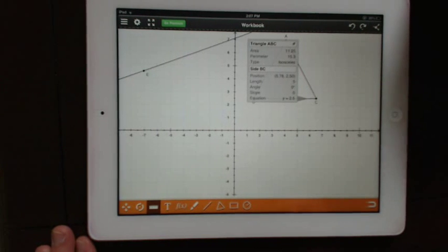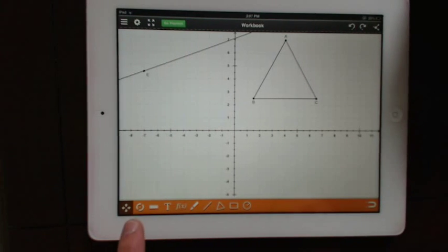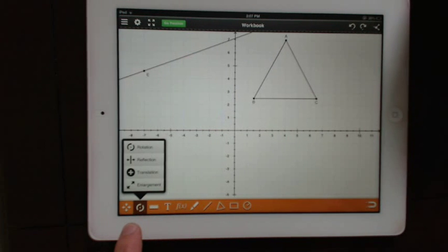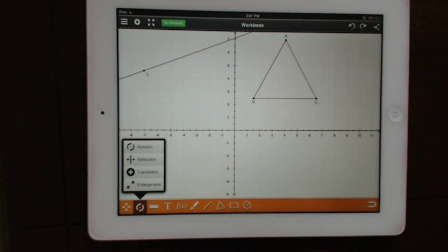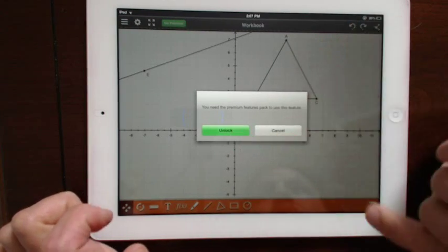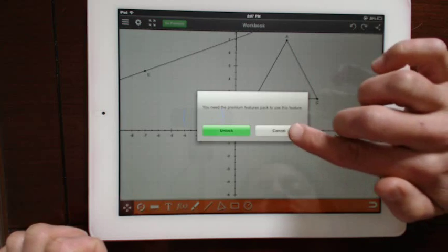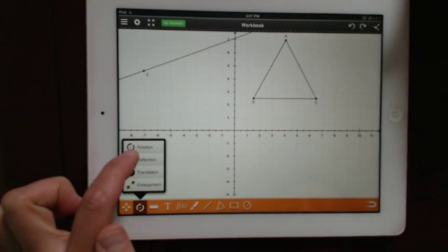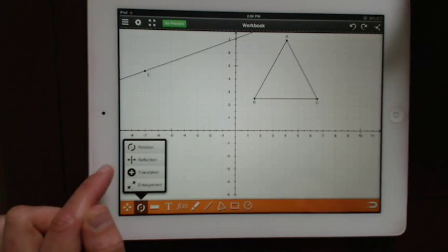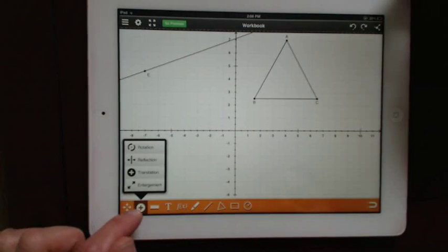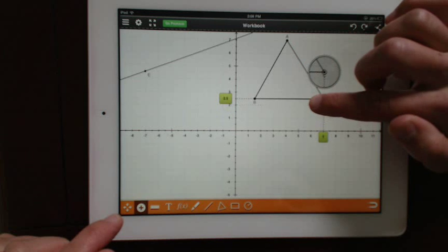Another great feature about this is that you can transform this triangle. In math terms you can rotate this triangle, so if you were to unlock the features that would be something that perhaps you'd want to purchase. You can reflect the triangle, do some translations. It's locking those now for me because I think you need to purchase the additional features.